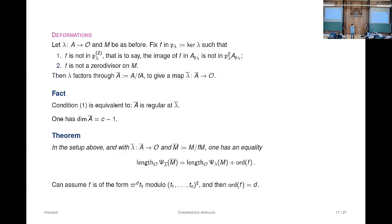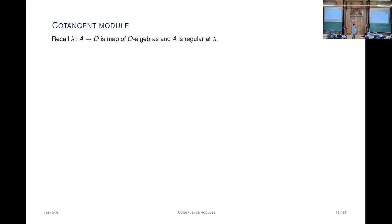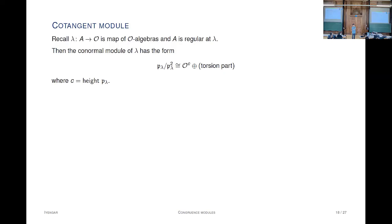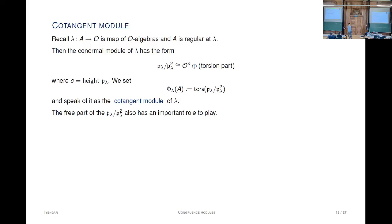The other ingredient that comes up is the cotangent module. We have a map of O-algebras, regular at lambda, and since it's always a DVR, the conormal module P mod P-squared has a free part and a torsion part. The regularity hypothesis tells you the rank of the free part must be the height of P_lambda, which is C. What you're interested in is only the torsion—the torsion part of this conormal module, which by slight abuse of language I'll call the cotangent module at lambda, just the torsion part. The free part also plays a role, but for now let's focus on the torsion part.